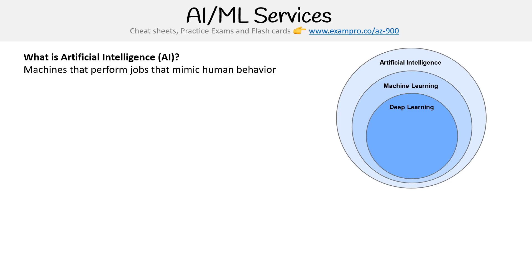So what is artificial intelligence, or AI? This is where machines perform jobs that mimic human behavior. That doesn't mean the technology behind it has to be complex — it could be if-else statements — but it could also be utilizing machine learning or deep learning. The point is that it mimics human behavior.